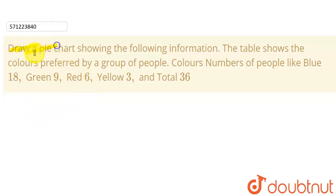So students, in this question we have to draw a pie chart showing the following information. The colors preferred by a group of people are listed here: Blue is 18, Green is liked by 9 people, Red is liked by 6 people, and Yellow is liked by 3 people.